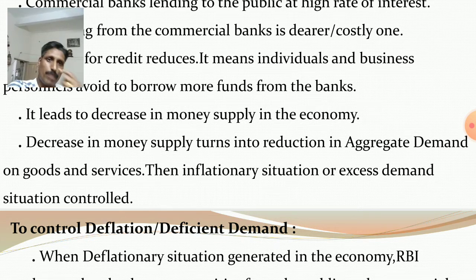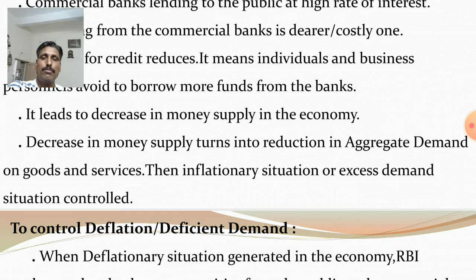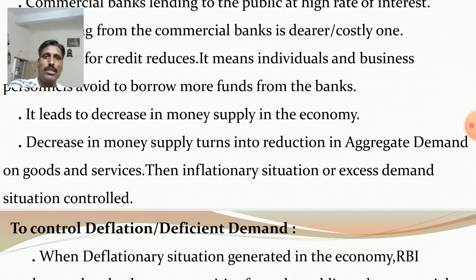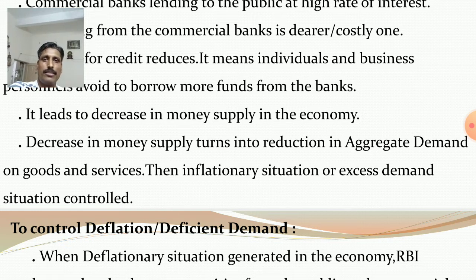Decrease in money supply turns into a reduction in aggregate demand on goods and services automatically. Money supply means money held by the public at a particular point of time. If money is not available with individuals, investors, or business personnels, then aggregate demand on goods and services decreases. When aggregate demand decreases, price level comes down, and the inflationary situation or excess demand situation is controlled.